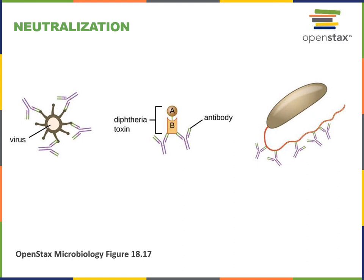In the middle we see the example of antibodies binding to a diphtheria toxin — a toxin secreted by bacterial cells. The diphtheria toxin needs to bind to receptors on our cells in order to have a toxic effect. When the antibodies bind to the toxin, this prevents the toxin from binding to the receptors on the surface of our cells, neutralizing the toxin and preventing its toxic effects.